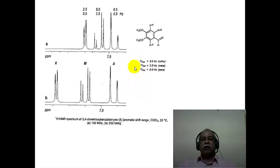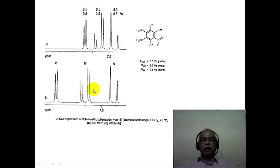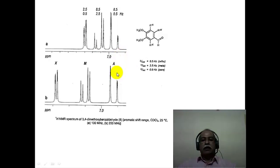Another example is dimethoxybenzaldehyde, whose spectrum we have already seen in an earlier module. At 100 MHz, the peak intensities within the doublets are very different — characteristic of second order behavior. At 200 MHz, the doublet intensities are more or less equal, tending toward a first order spectrum. Recording it at 600 MHz would produce a typical first order spectrum.